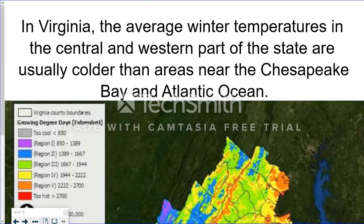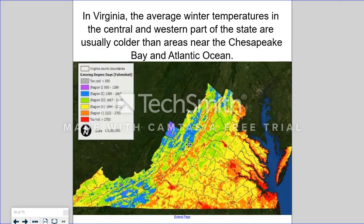In Virginia, we have average winter temperatures in the central and western part of our state that are colder than the temperatures along the Chesapeake Bay and the Atlantic Ocean. And that's because of thermal energy. There's specific heat that the ocean has gathered over the summer months, and all winter long it slowly releases that heat. So you will see this area of the state typically warmer in the winter times than this area of our state.